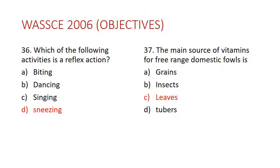Question 36: Which of the following activities is a reflex action? The answer is D — sneezing. A reflex action is an automatic response to a situation. For example, when you touch a hot object, you automatically withdraw your hand — it is not voluntary. Sneezing is also a reflex action because it just happens; you don't do it voluntarily.